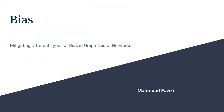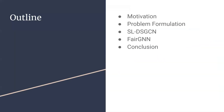Today I'm introducing an overview about mitigating different types of bias in graph neural networks. First I'll give a brief idea about the motivation and why it's important, then a more formal definition about the problem and the different types of bias. Then I'll introduce two solutions — SLDSGCN and FairGNN — their properties, architecture, and results. Finally I'll conclude with some results.